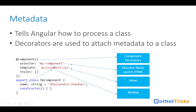This object has a property called selector — the selector is the directive name, or we can say the custom HTML tag, which we can use to access this component. We also have the template, which defines the view for our MyComponent. Then we have the data binding syntax, where we are using double curly braces.